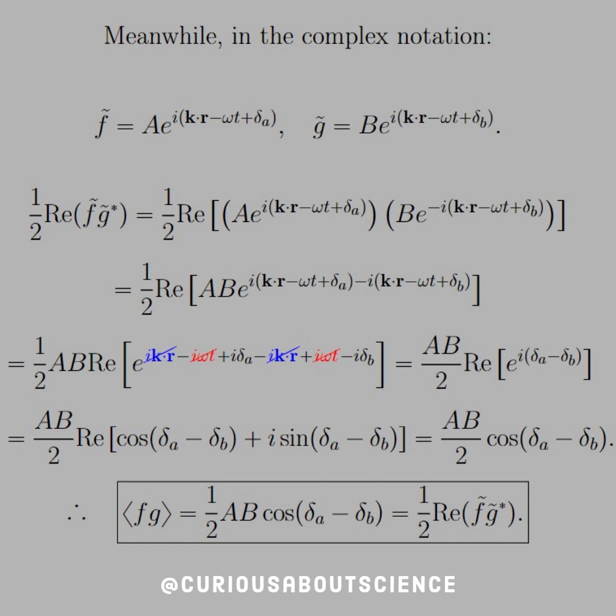We have i k r in blue, canceling with the negative i k r. We also have the negative i omega t in the red, canceling with the positive i omega t. And all that's left here is i, which is a common factor, so we factor that out, delta a minus delta b. Okay, fair enough.